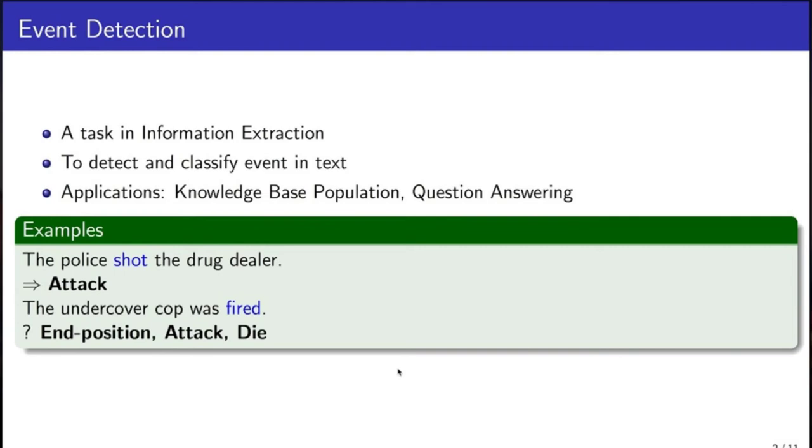For example, given a sentence, the police shot the drug dealer. The word shot expresses an event of attack. So an ideal event detector should be able to recognize it and classify it into a class of attack.